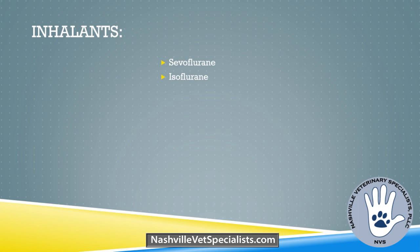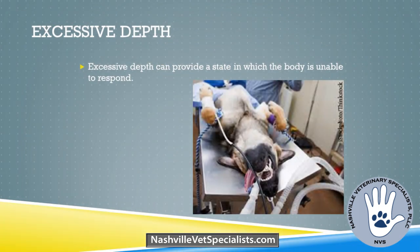Excessive depth is the second cause on the list — it provides a state where the body can't really respond. In 1846, Dr. Wendell described anesthesia as 'without feeling' and analgesia as 'without pain.' As anesthesia inhalants and drugs still cause both of these, that really is the overall goal of anesthesia — and it relates to the risk of excessive depth contributing to hypotension.